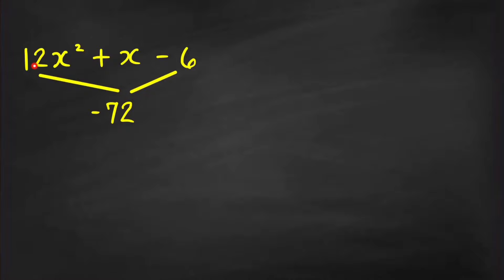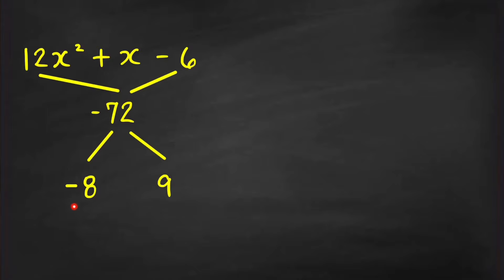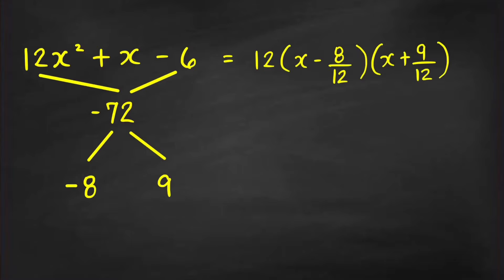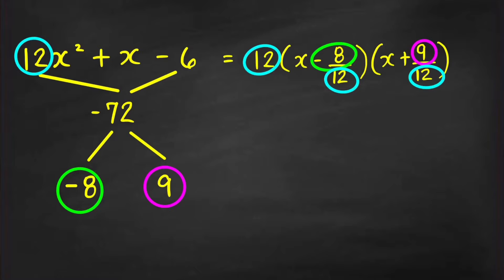First, multiply 12 and -6 to get -72. Now think of two factors of -72 whose sum equals the coefficient of x, which is 1. Those factors are +9 and -8, since 9 + (-8) = 1. We can then write this trinomial as a product: 12 times (x - 8/12) times (x + 9/12). The -8 and 9 come from our factors, and the three 12s are the coefficient of x².